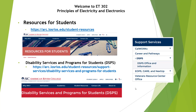At American River College, we're very fortunate to have resources for students. We have CalWorks, DSPS, EOLPNS, CARE, NextUp, and a Veterans Resource Center. All of these are available on the Student Resources page on our American River College website. Excellent people over there — if you need any of these services, check them out.